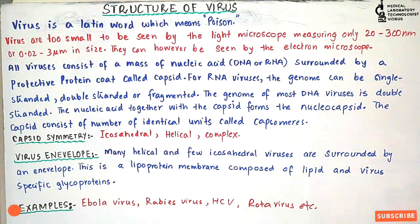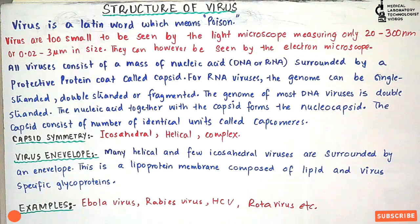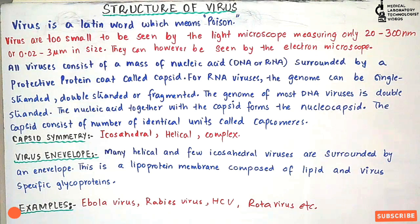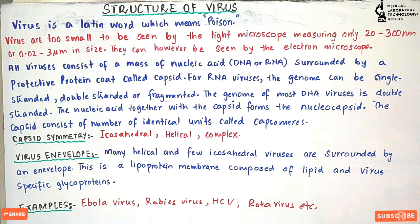Virus particles are too small to be seen by the light microscope. We can see bacteria and parasites under light microscopy, but viruses are too small. Their size is 20 to 300 nanometers, or 0.02 to 0.3 micrometers. However, it is possible to see viruses by electron microscopy, which is used in virological laboratories.